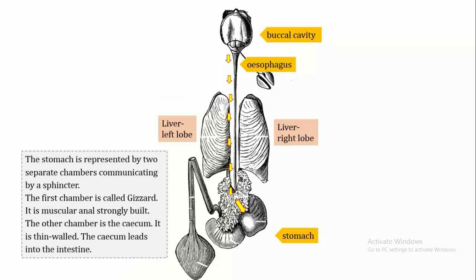The first chamber is called the gizzard. It is muscular and strongly built. The other chamber is the cecum. It is thin walled and leads into the intestine.